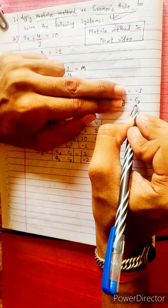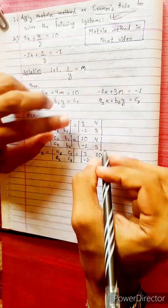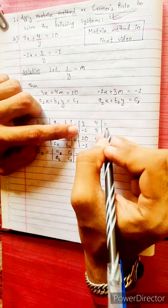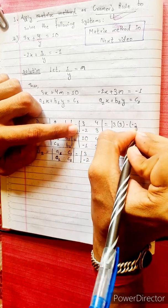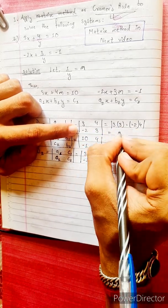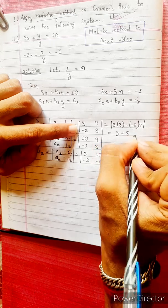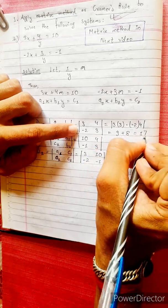Minus 1 equals to A, B, C, D. The determinant is A times D minus B times C. So 3 into 3 minus minus 2 into 4 equals to 9 minus minus 8, which is 9 plus 8, equals to 17.